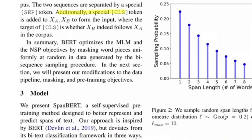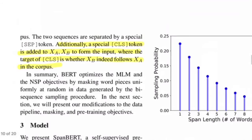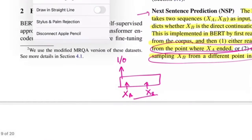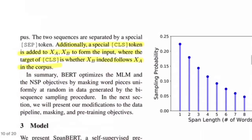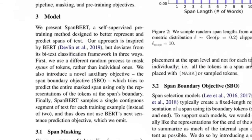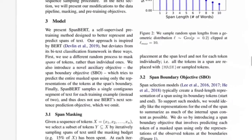A special CLS token is added to XA and XB to form the input, where the target CLS output indicates whether XB indeed follows XA in the corpus. The final CLS embedding, after applying a classifier, gives a zero/one prediction. That covers the NSP background; now let's understand the main contribution of the paper in detail.